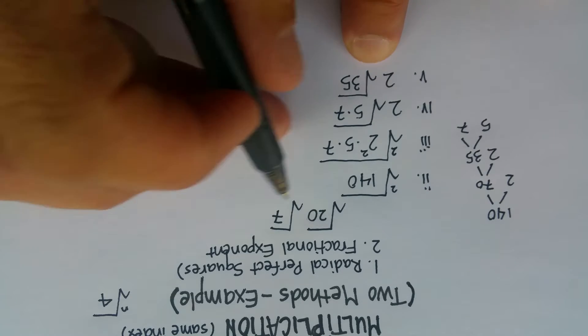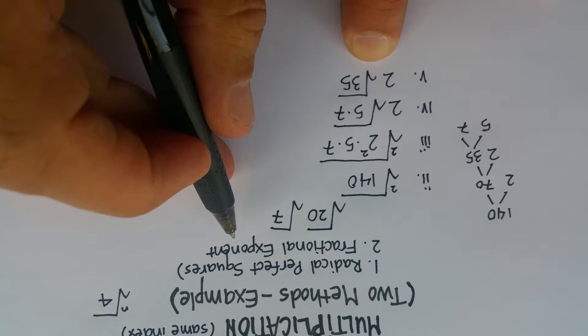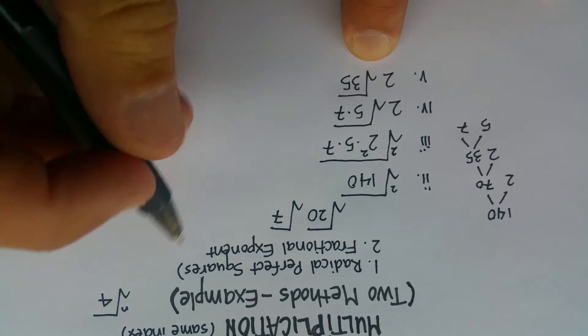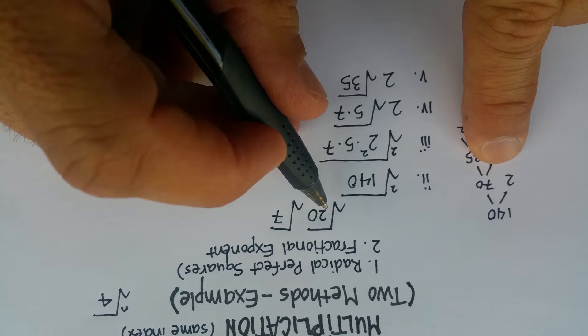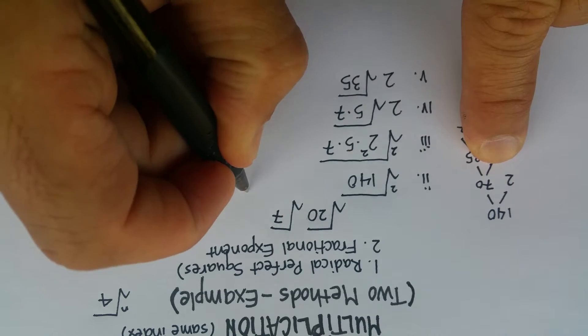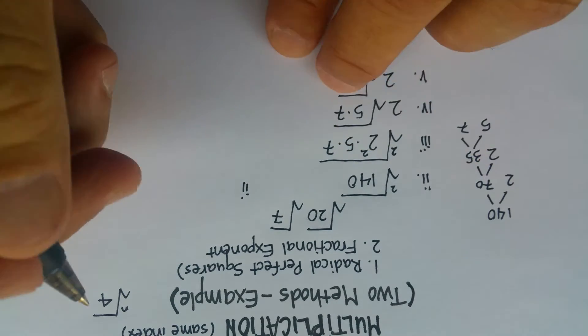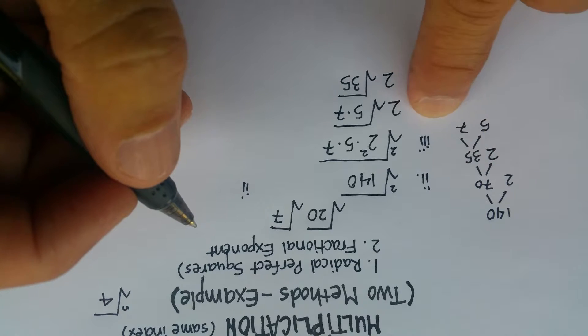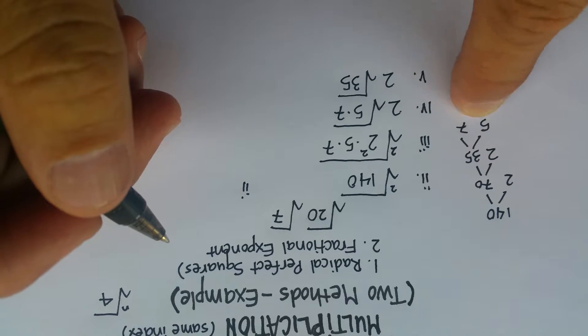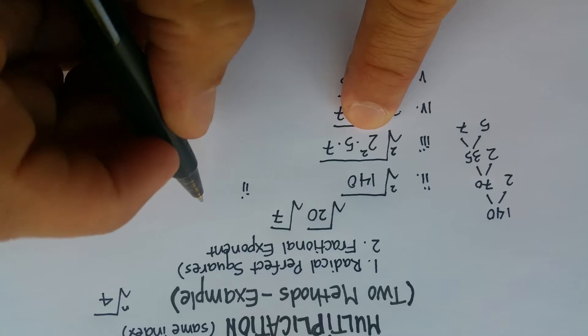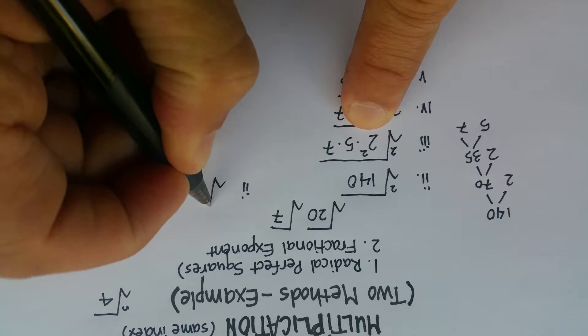You can also do it using what I call the fractional exponent method. Let me show you how that works. So again, we have a 20 and we have a 7. So second step, I'm going to actually just go ahead and do the prime factors, just like we did here. And I already have that, so I'm going to write that down here.